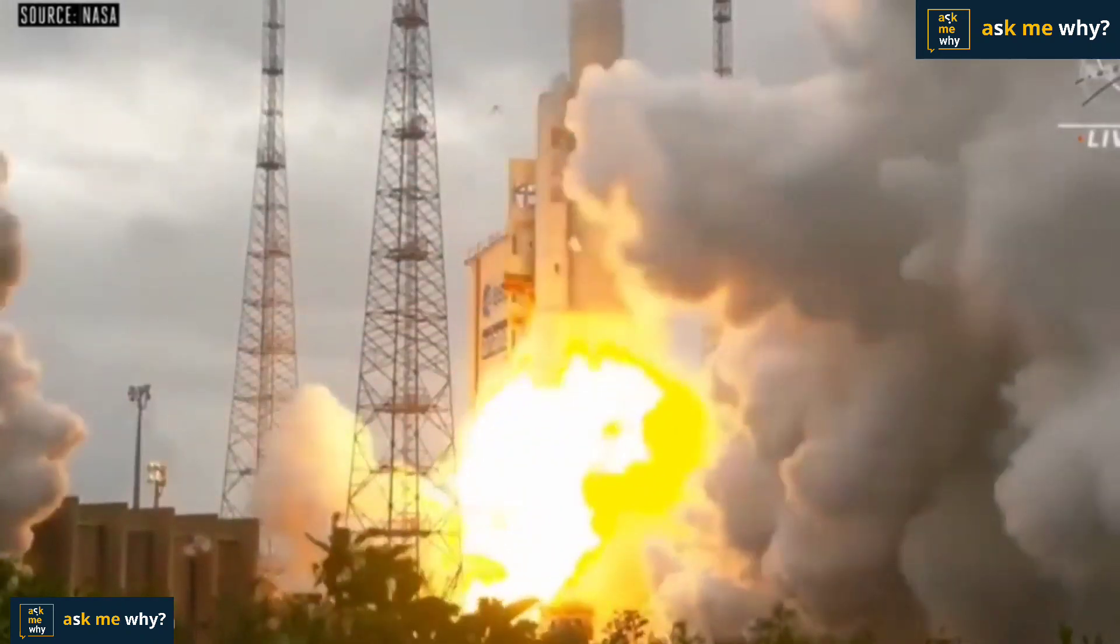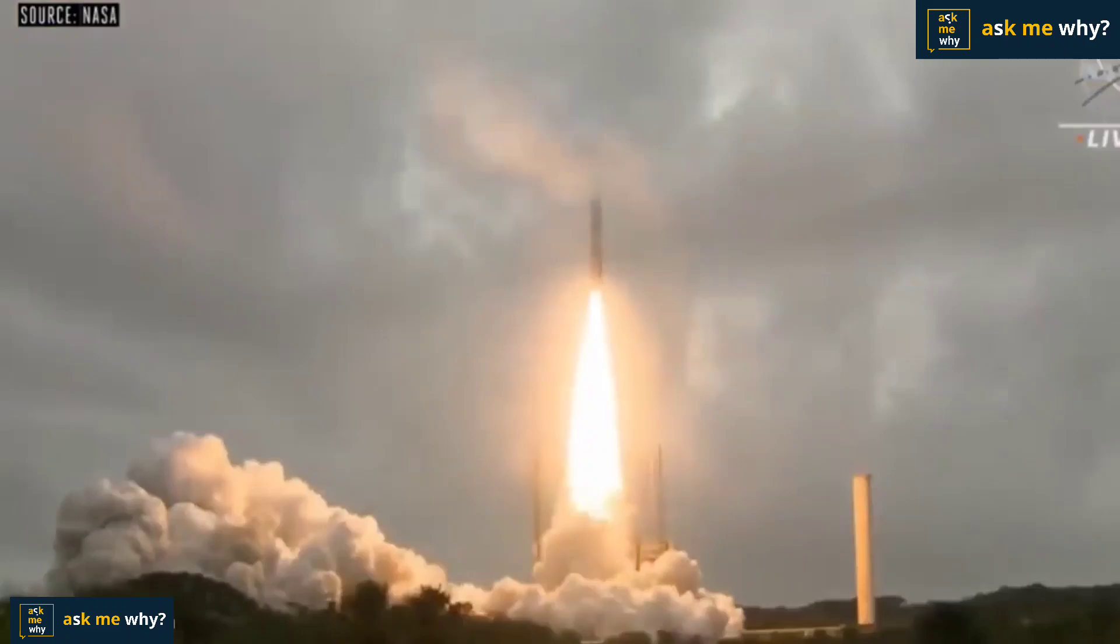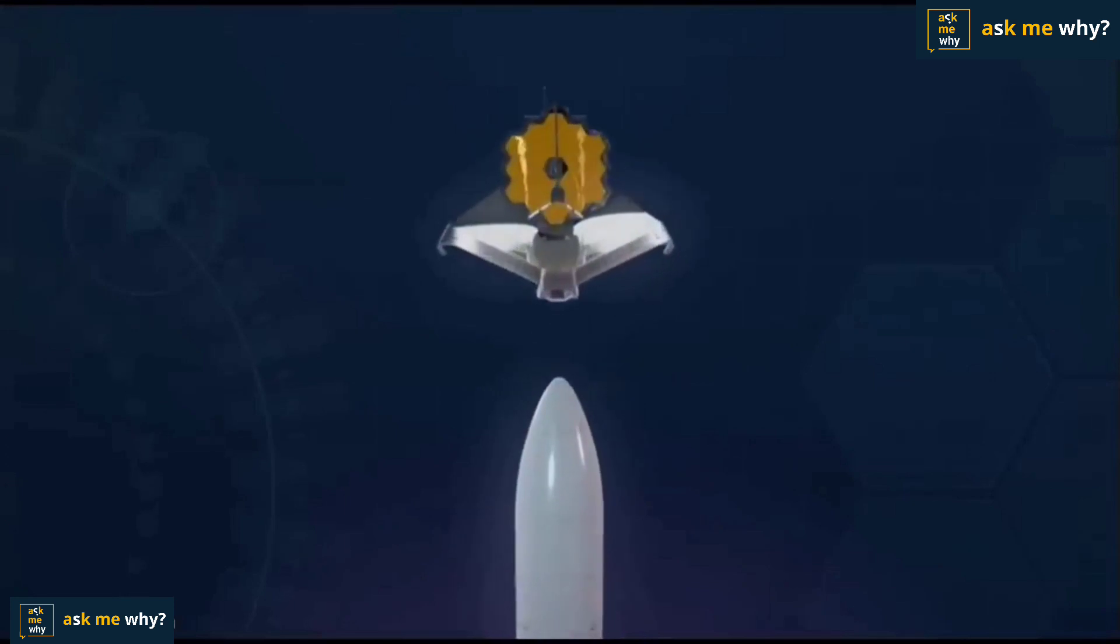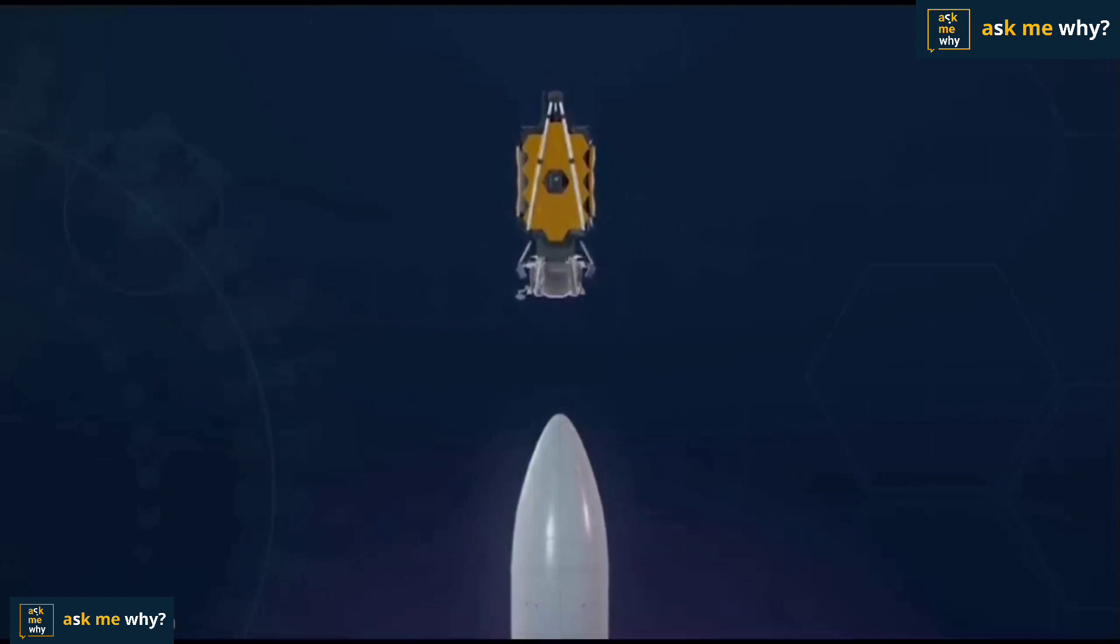Finally, on December 25, 2021, NASA launched the 6500 kilograms most powerful telescope into space. This telescope which is the size of a tennis court and as high as a three-story building does not fit in a 5.5 meter wide rocket. So it was folded and sent in an origami fashion.